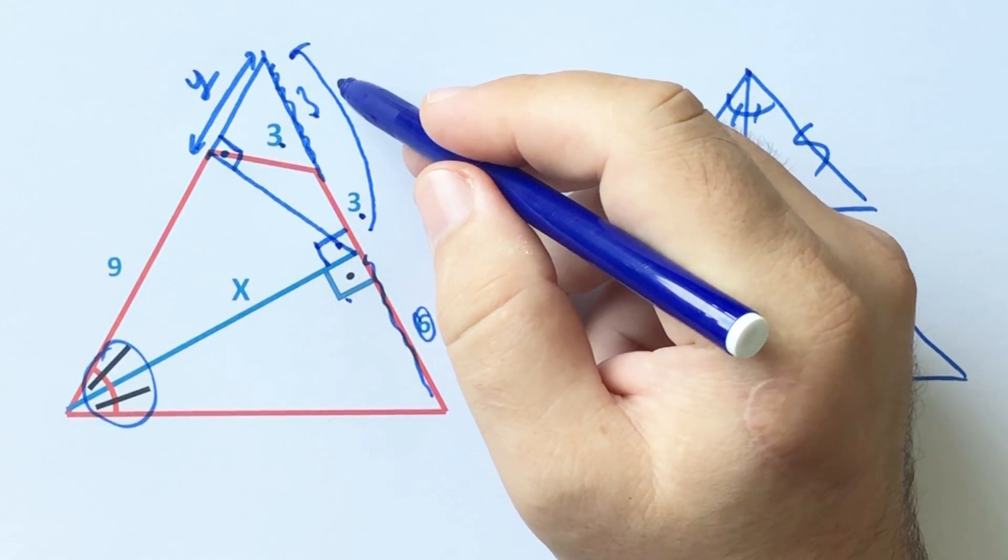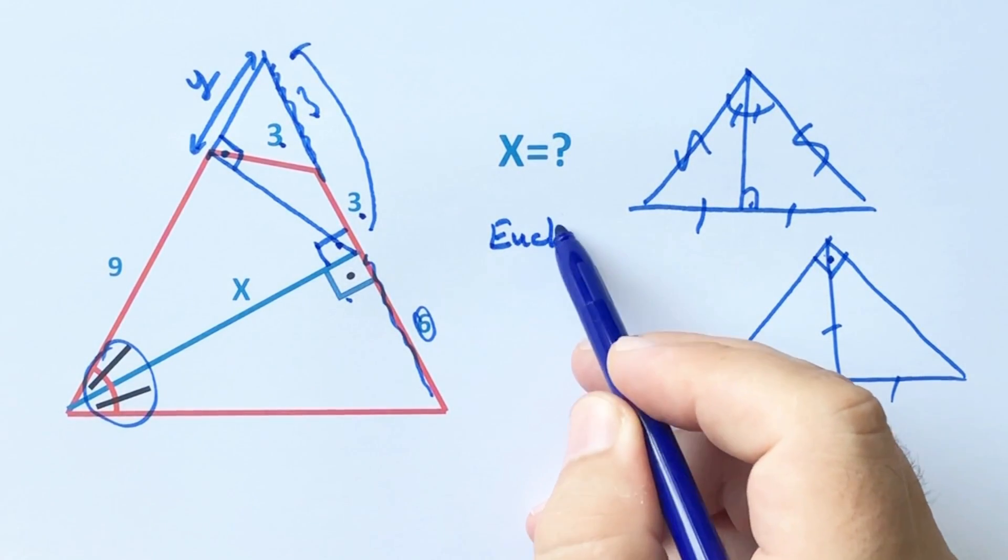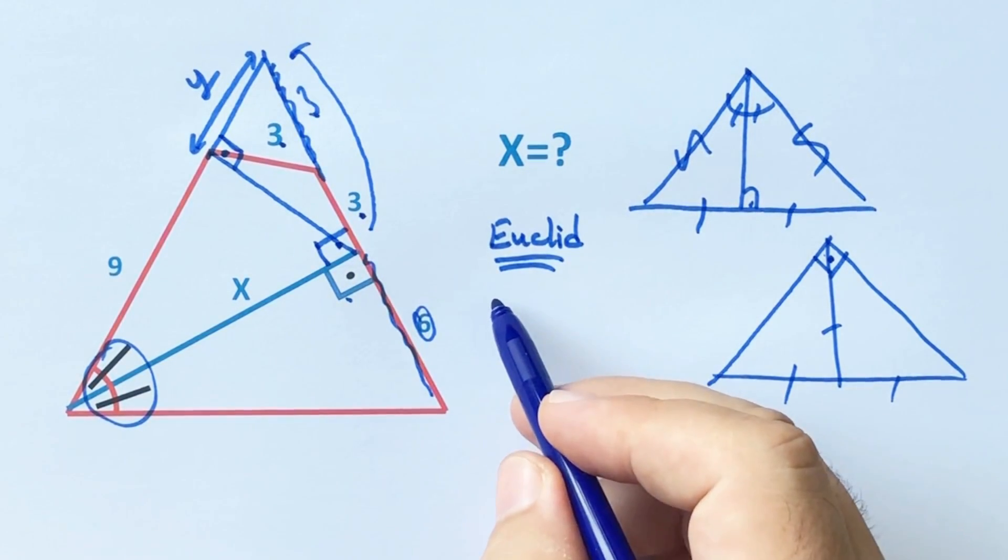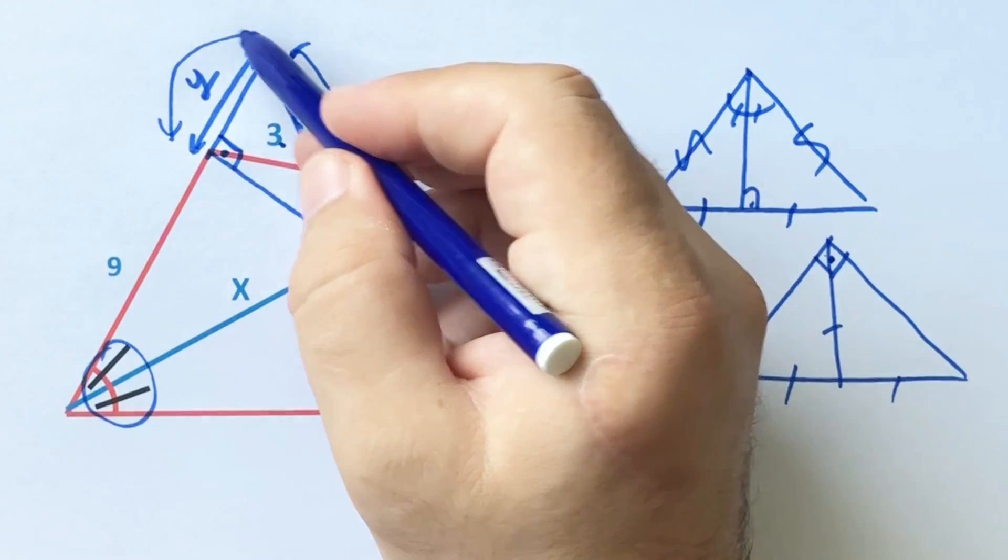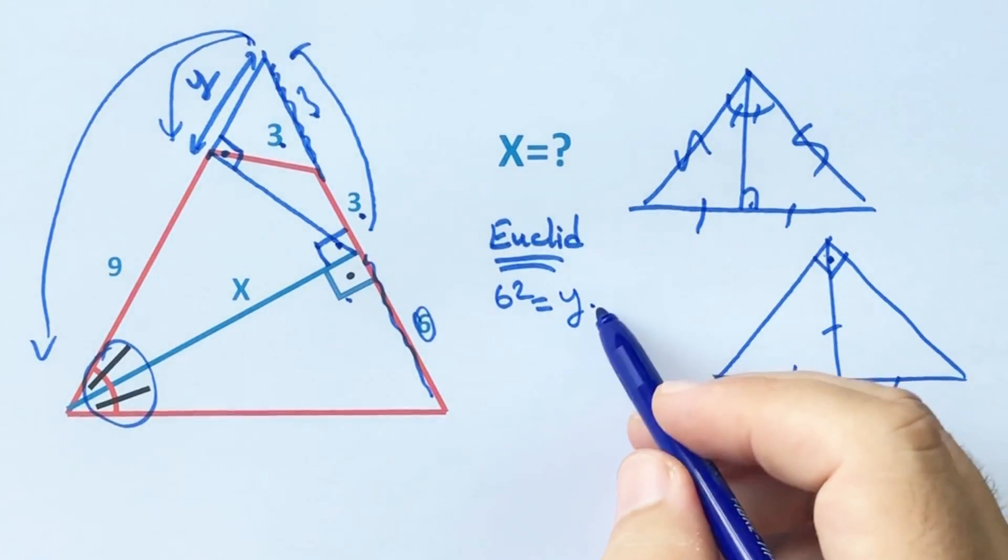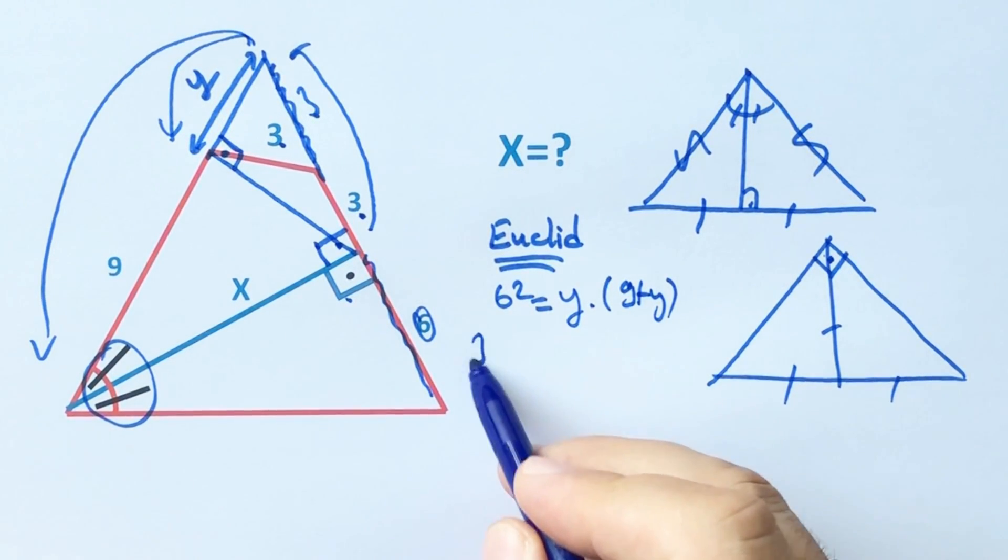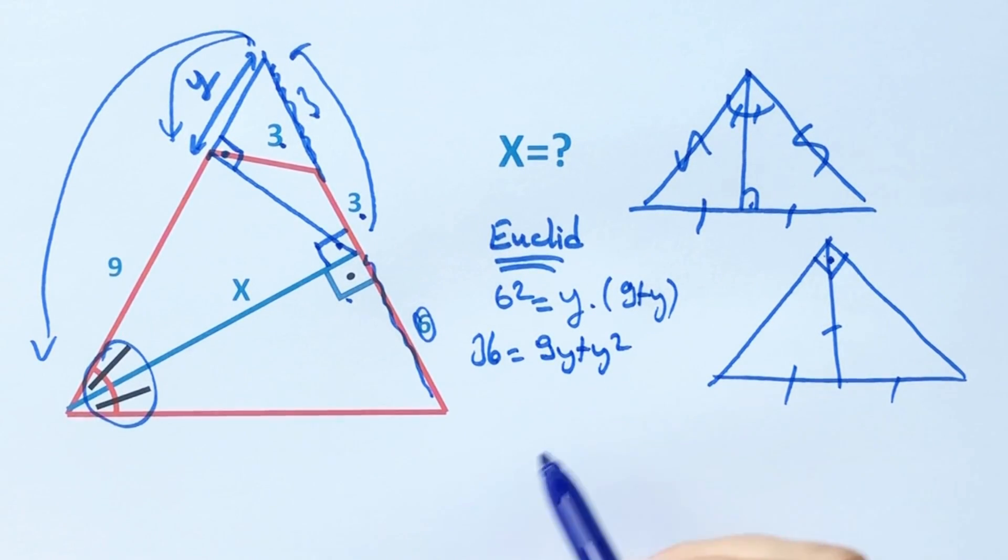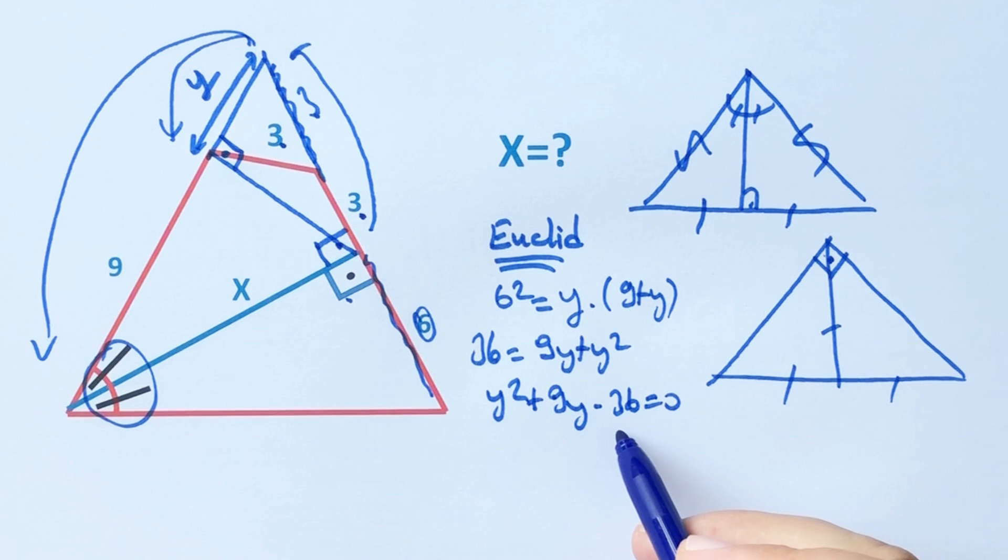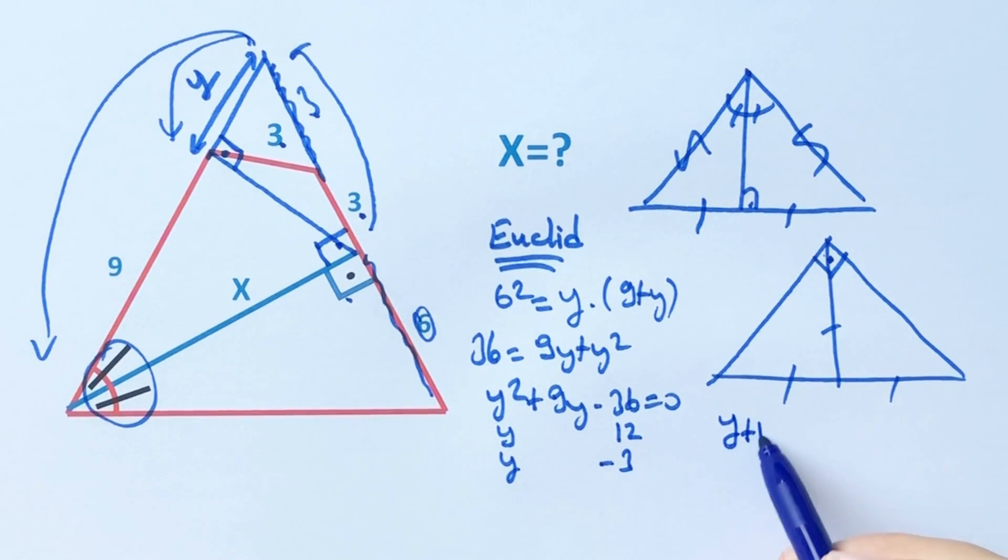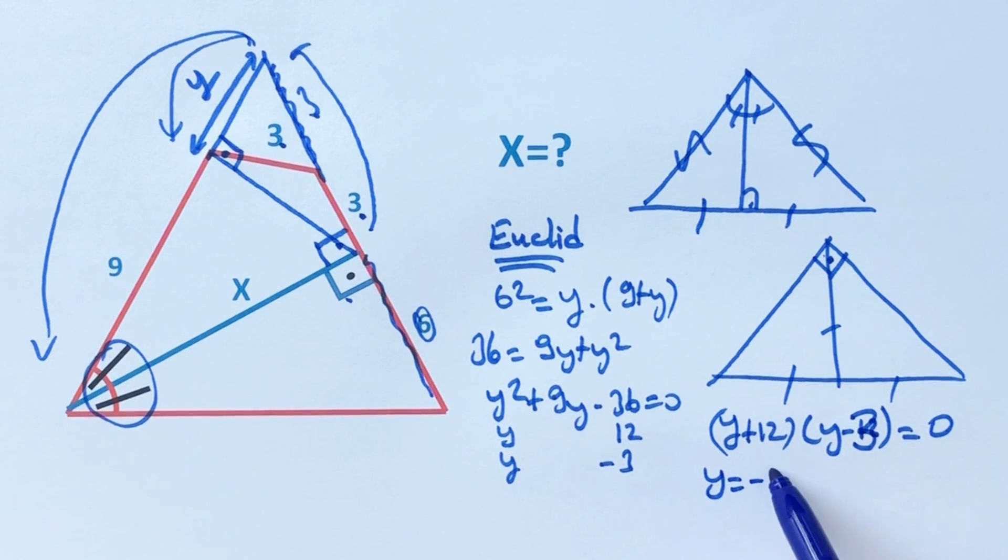According to Euclidean theorem, the square of this side must equal y times the whole length, y times y plus 9. Therefore, 36 equals 9y plus y squared. Y squared plus 9y minus 36 equals zero, so y plus 12 times y minus 3 equals zero. Therefore, y equals 3 units.